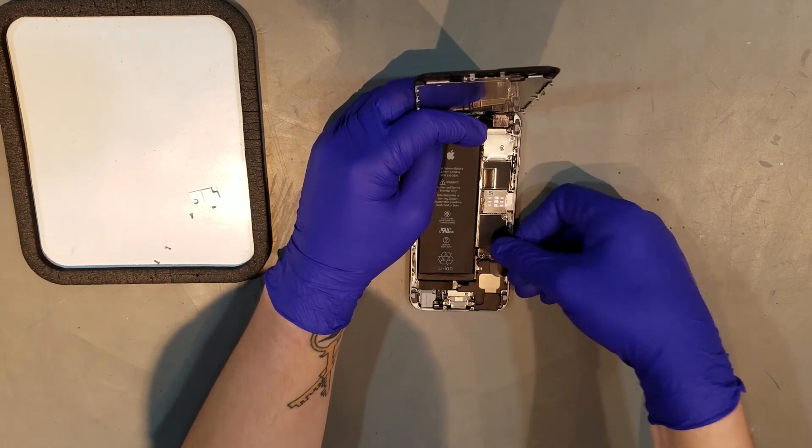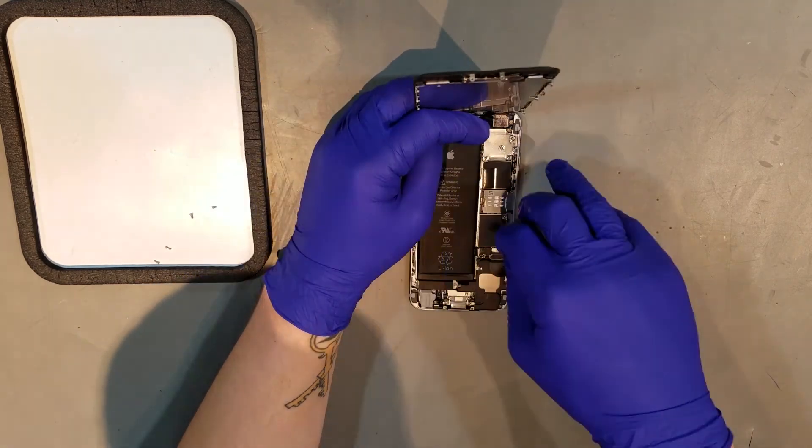Next, the battery can be clipped back in, and the plate and two Phillips screws that secure it in can be replaced as well.